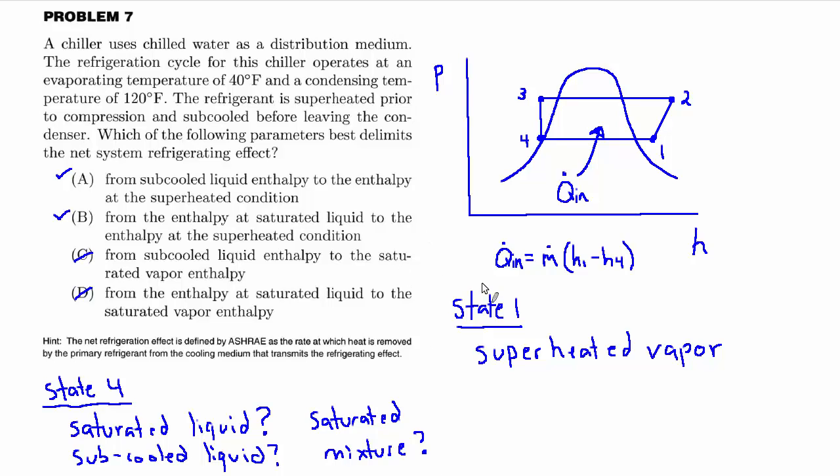But it turns out that it doesn't matter because the expansion process is isenthalpic, a constant enthalpy process. That's why it's a vertical line on a pH diagram. So what that means is that regardless of where state 4 is, whether it's saturated liquid, subcooled liquid, or saturated mixture, the enthalpy is the same as the enthalpy at state 3. So H4 equals H3.